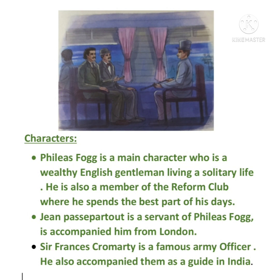Let's see the characters. In this extract we have mainly three characters. Phileas Fogg is the main character, a wealthy English gentleman living a solitary life. He is also a member of the Reform Club where he spends the best part of his days. Jean Passepartout is the servant of Phileas Fogg who has accompanied him from London. Sir Francis Cromarty is a famous army officer who accompanied them as a guide from Bombay, bound for Calcutta in India.